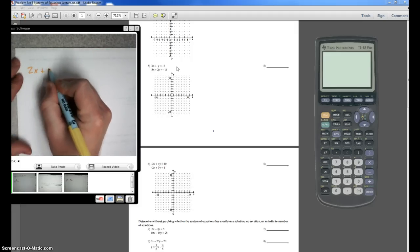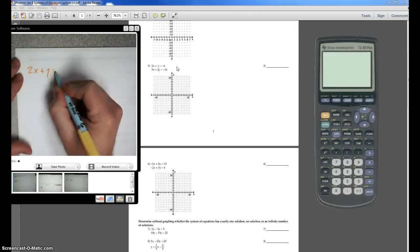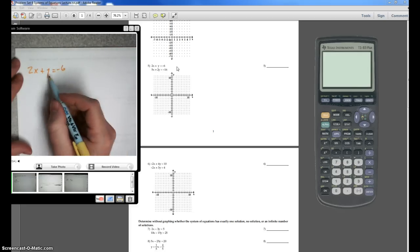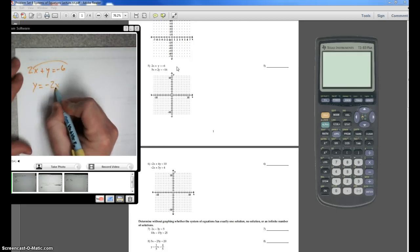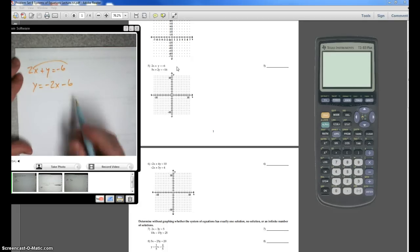So 2x plus y equals negative 6. I want to solve that for y, so move your 2x over. So y equals negative 2x minus 6. There's one equation I want to graph.